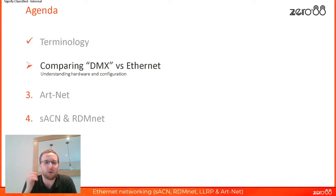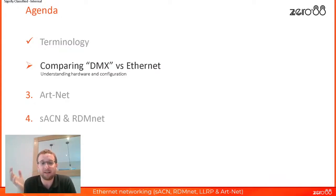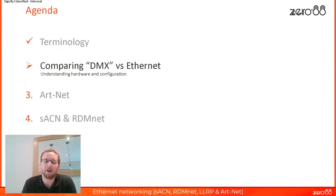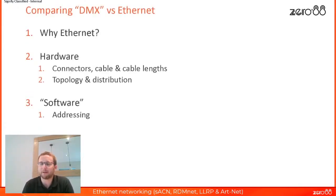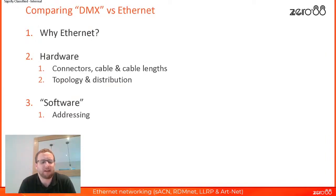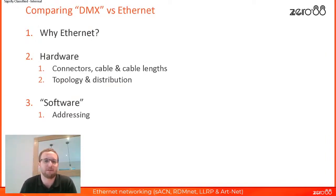The big chunk of today is comparing DMX versus Ethernet. We've got an hour in total, so we won't go super in-depth, but hopefully we'll point you in the right direction. We're comparing in three categories: first, why Ethernet — DMX is working fine, so why move over? Second, the hardware — connectors, cabling, wiring. Third, what I've loosely called software — the configuration, specifically how you address things on an Ethernet network.